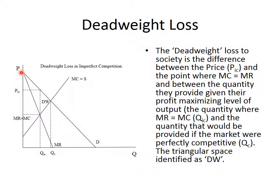Profit is revenue minus cost. Here's our cost curve. Any prices above this cost curve represent profit per unit. So our profit is two areas: this rectangular area above the cost curve, and this triangular area above the cost curve. We could figure out exactly how much this profit would be and how much the consumer surplus would be. And then this is the deadweight loss — it is both a function of the unused capacity and the artificially high price charged in the imperfect market.